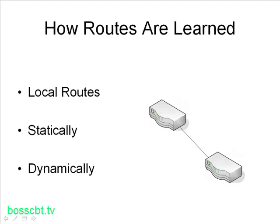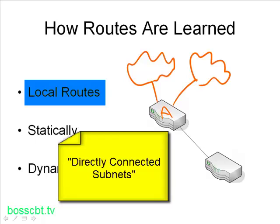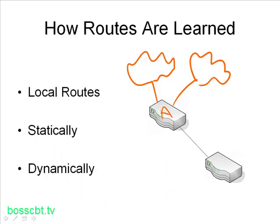We'll begin by looking at how routes are learned by the router. There are a couple different approaches, and we'll start with local routes. Local routes mean routes that are connected to the router itself. So let's say this is router A, and it has two network segments connected to it. When router A looks to populate its route table, the first thing it'll do is look at itself and say, what am I connected to? What do I know about already? It'll take those routes and populate its routing table. These are referred to as local routes or directly connected subnets.